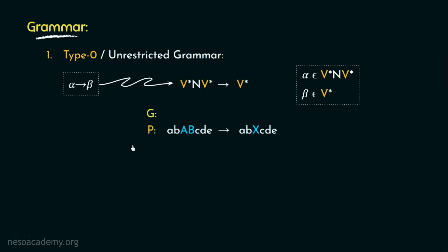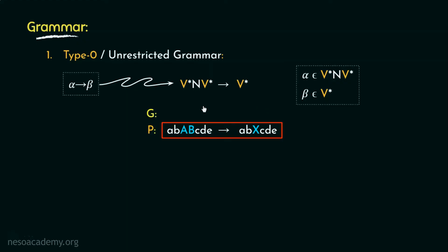In the previous session, we observed an example of type 0 grammar. Since type 0 grammars have no restrictions over the production rules, the left hand side of the production rule can generate a right hand side having fewer elements than the left hand side. Production rules of this kind are problematic because the number of steps required to derive a specific string of terminals becomes indefinite. Due to this, type 1, that is the context sensitive grammars, came into picture.